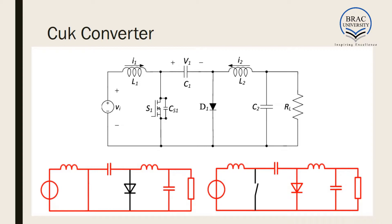In the DC-DC converters that we have learned so far, we have seen that the transfer of energy takes place to an inductor. In the case of the Cuk converter, we can see we have two inductors and a capacitor. So the capacitor also takes part in energy transfer. At certain half of the circuit — that is the on-state or off-state — the inductors and the capacitor get charged, and in the other half they get discharged.